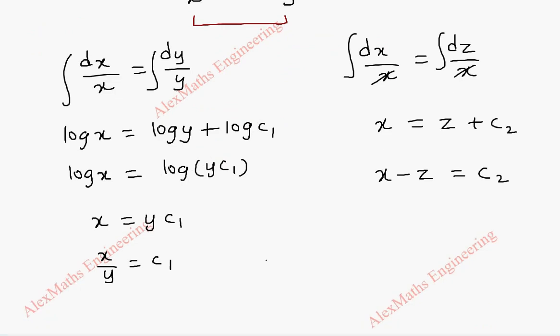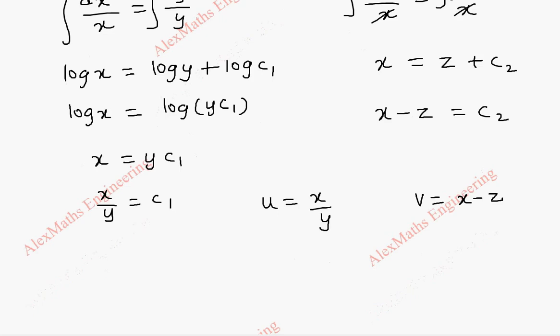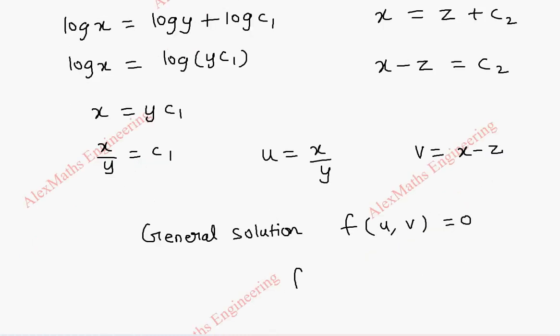Taking this as u, that is u is equal to x by y, and v equal to x minus z. Our general solution is f of u, v equal to 0. So it means f of x by y, x minus z equal to 0.